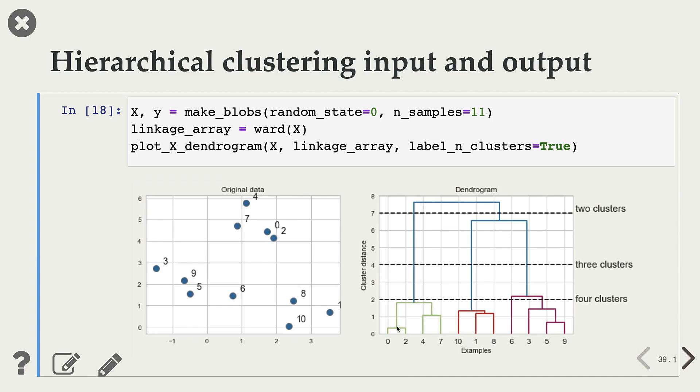For example, this particular branch goes till here, and then it gets merged with this other cluster. And these branches, these other branches, are kind of long. So what's the meaning of that? Very long branches means that those clusters last for a long time.